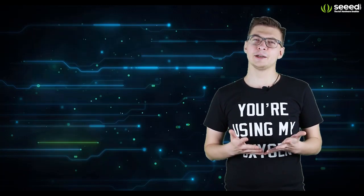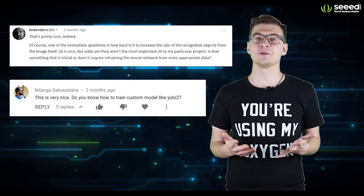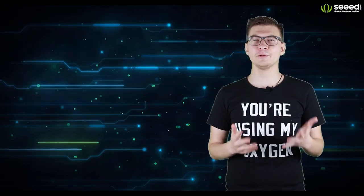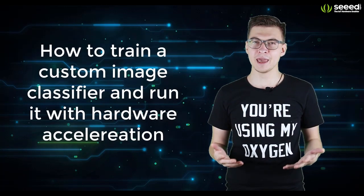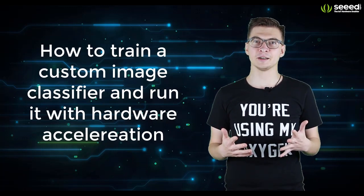Out of many questions people have asked me in the comments was how can I recognize an object that the neural network wasn't trained for? In other words, how to make your own image classifier and run it with the hardware acceleration?